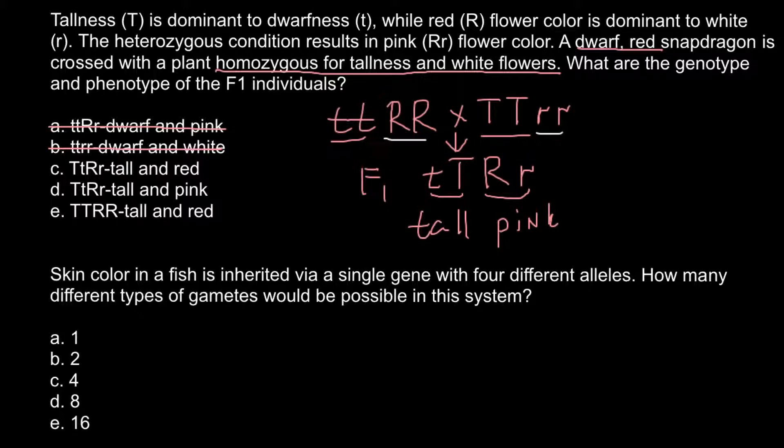As you see, the genotype is the same, capital T small t capital R small r. But here is a mistake. It says tall, but the correct answer would be tall and pink. So we can cross out answer C.